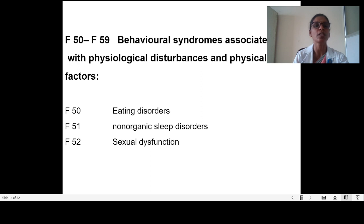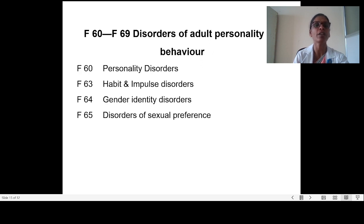F50 to F59 deals with behavioral syndromes associated with physiological disturbances and physical disorders. F50 is eating disorders, F51 is non-organic sleep disorders, and F52 is sexual dysfunction. F60 to F69 covers disorders of adult personality and behavior: F60 deals with personality disorders, F63 habit and impulse disorders, F64 gender identity disorders, and F65 disorders of sexual preference.